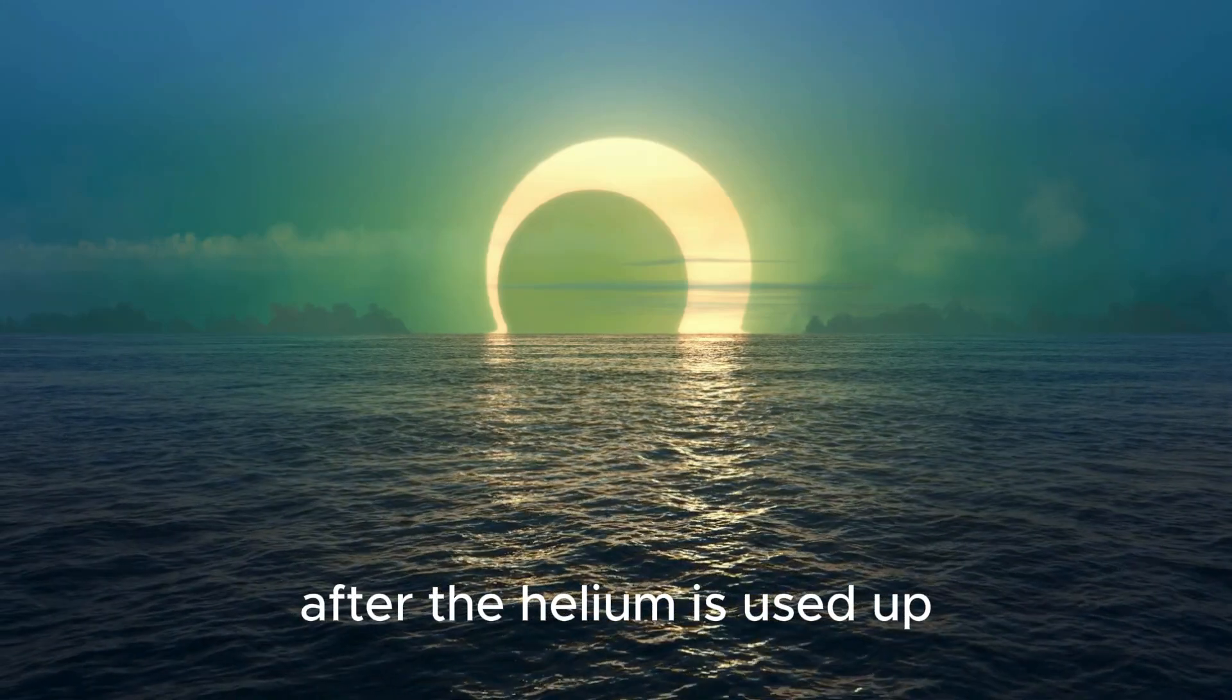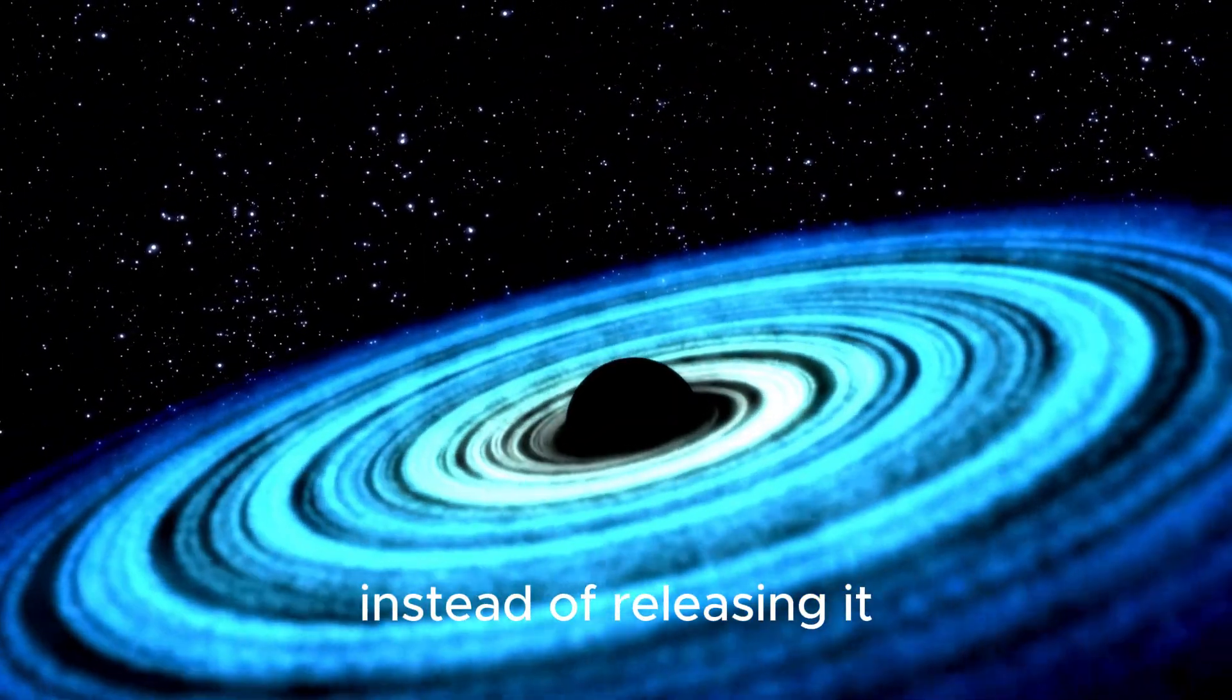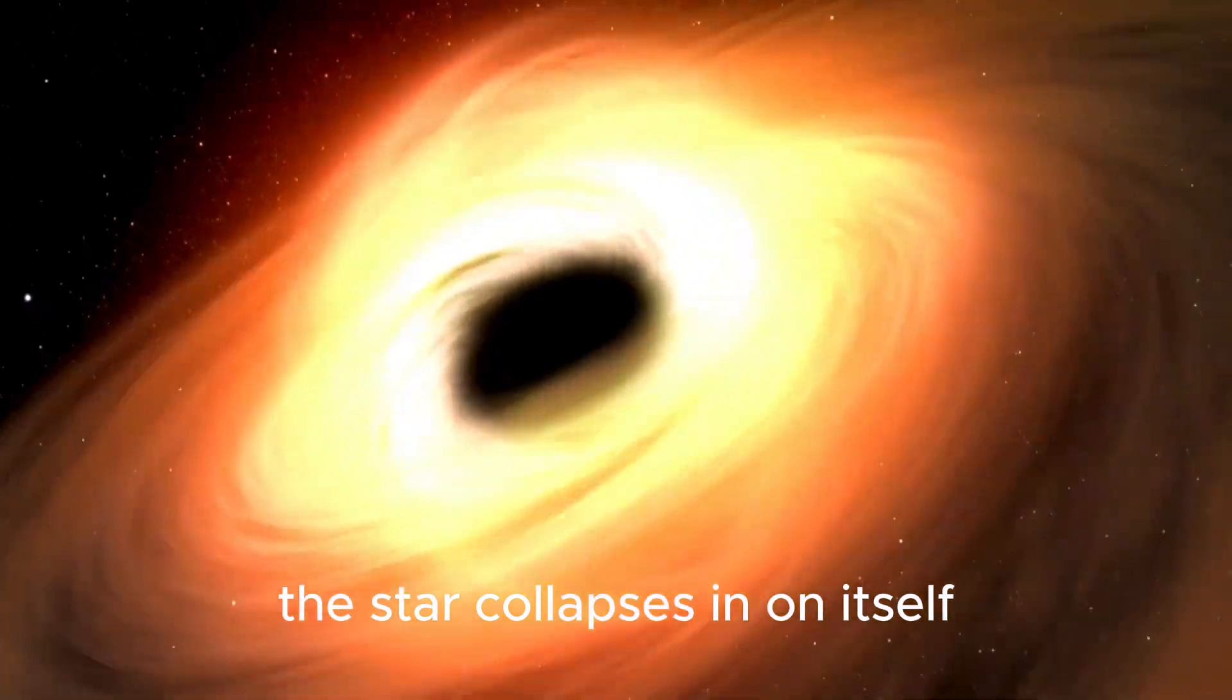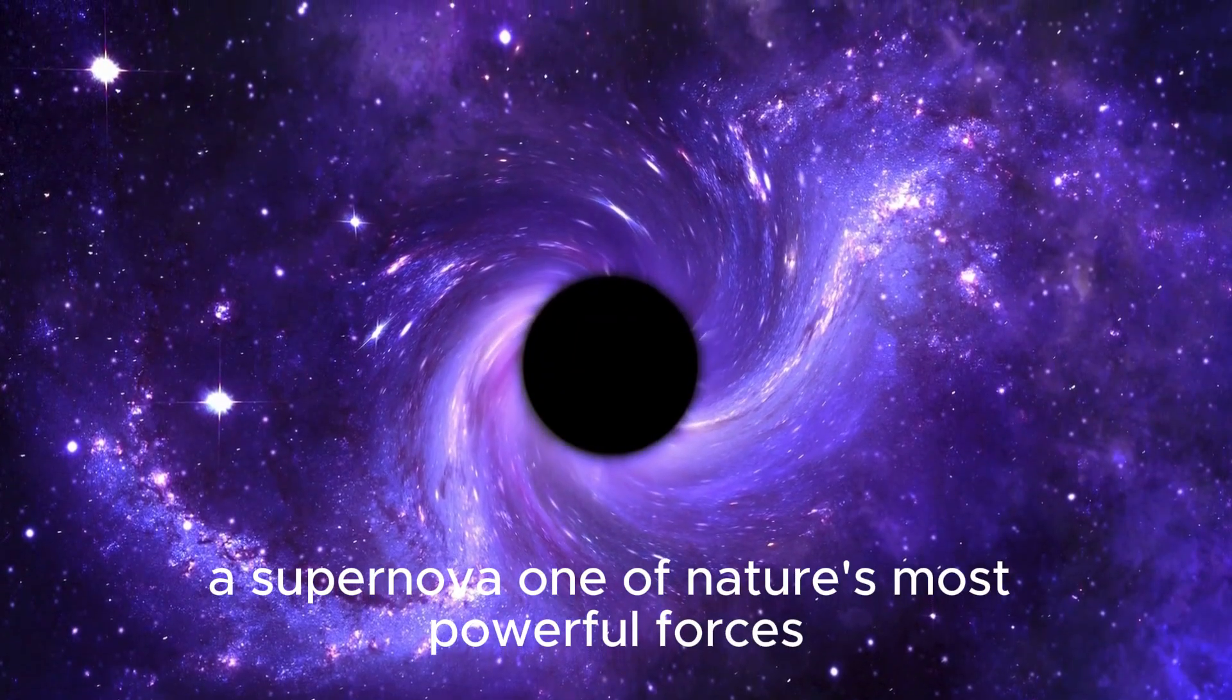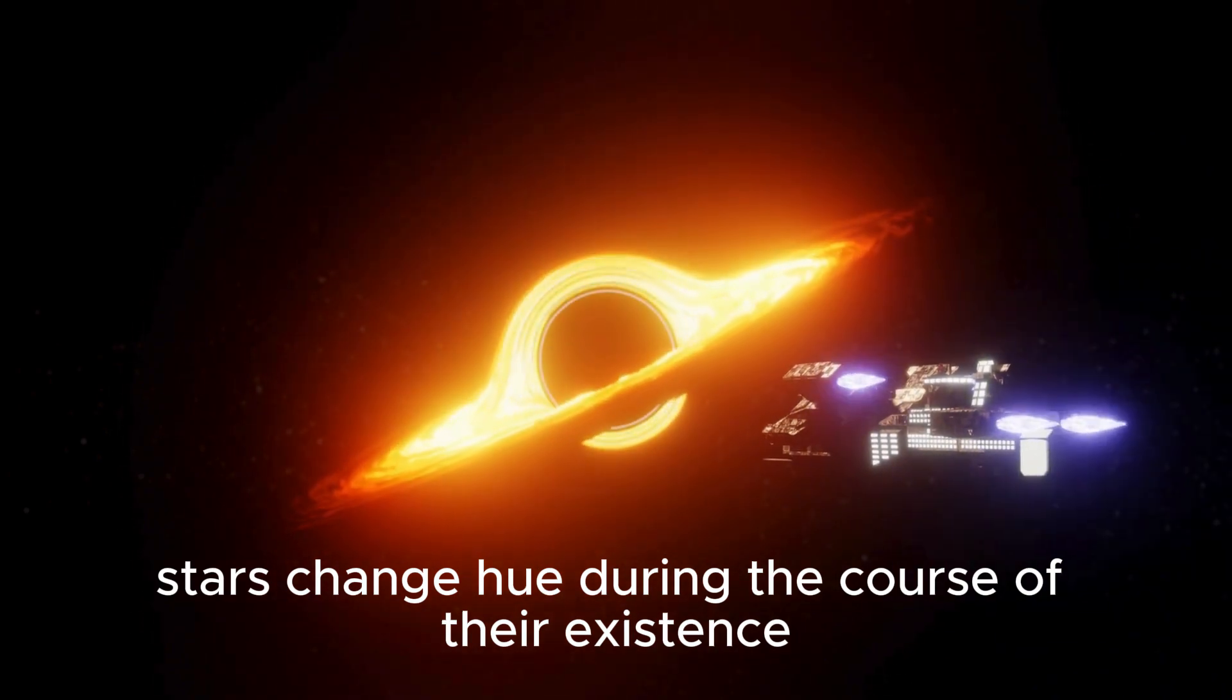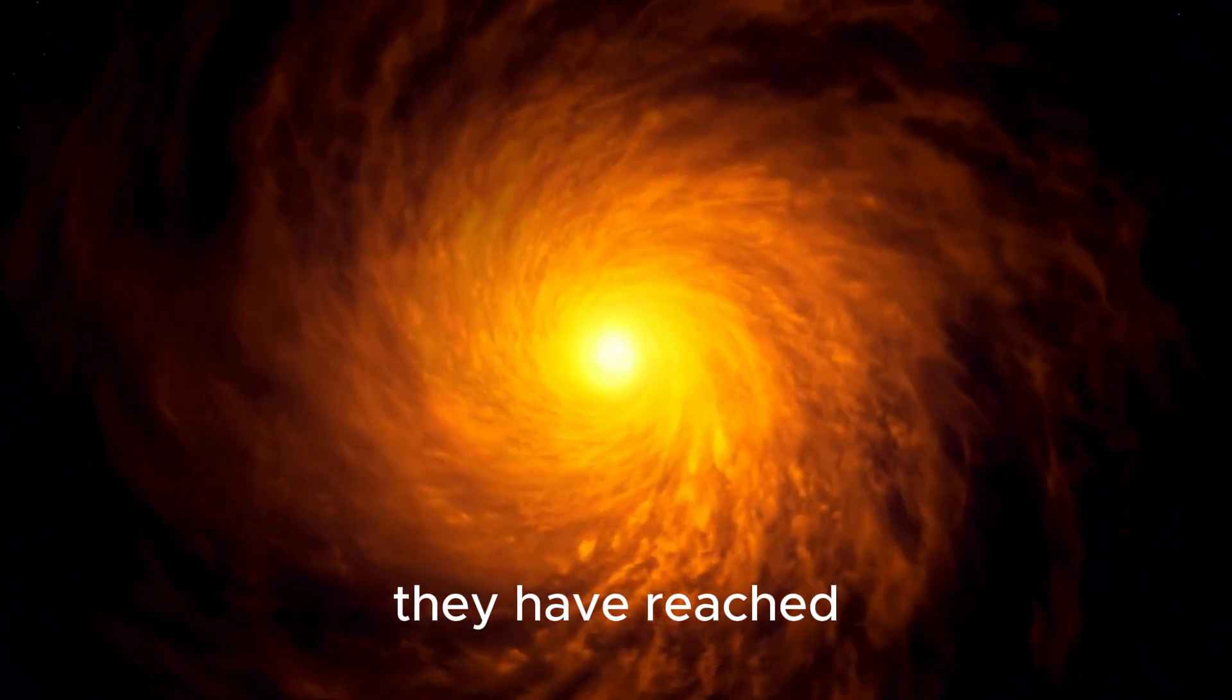When this happens, the fusion of neon with ion absorbs energy instead of releasing it because there is nothing to oppose the star's very powerful gravity. When ion begins to fuse, the star collapses in on itself, giving rise to a supernova explosion. A supernova, one of nature's most powerful forces, can generate more energy than 10 billion suns. Stars change hue during the course of their existence, from the youngest, hottest blue forms to the older, cooler red varieties, depending on what stage of their stellar evolution they have reached.